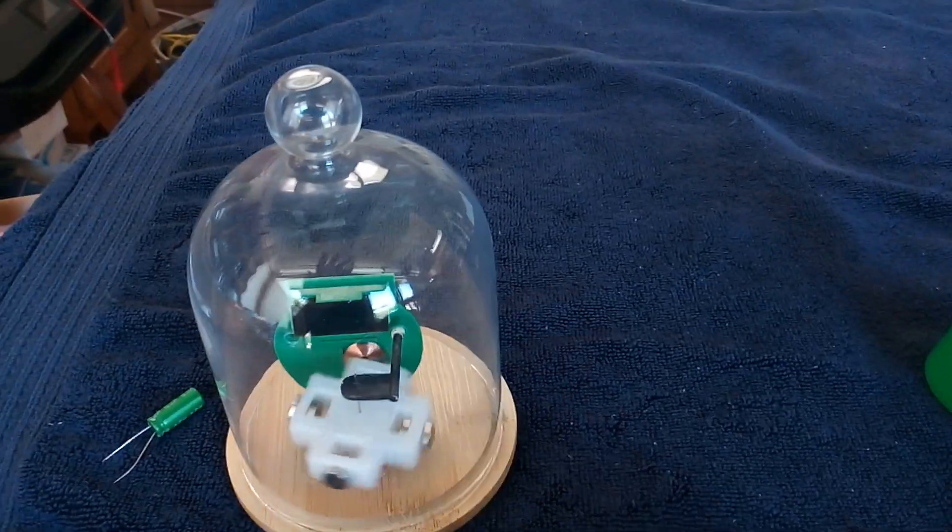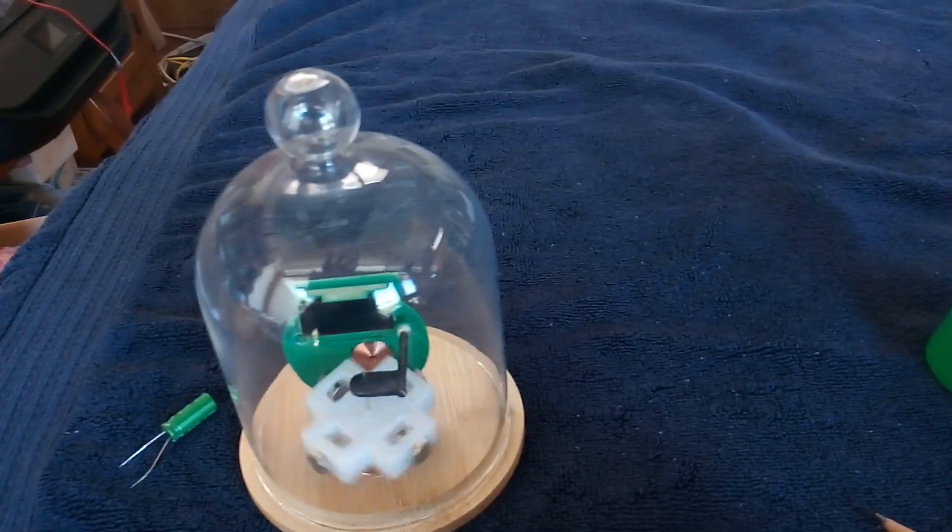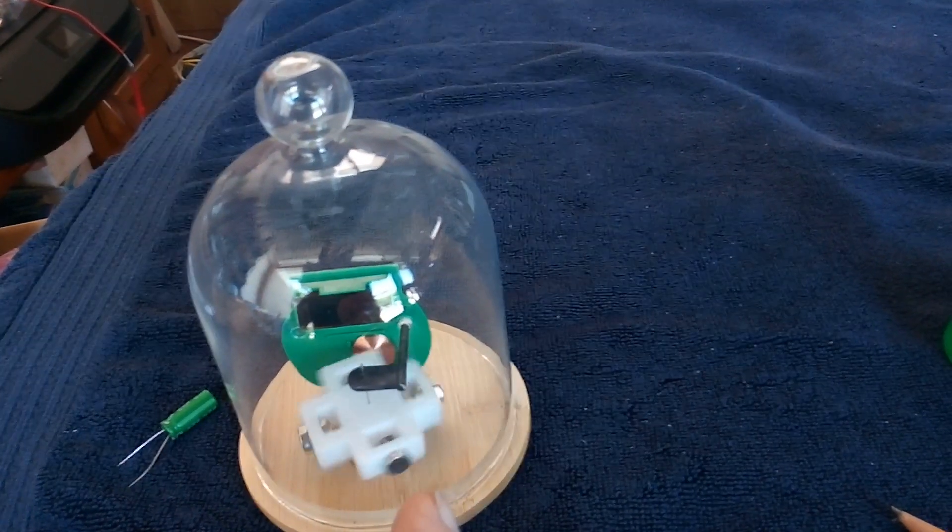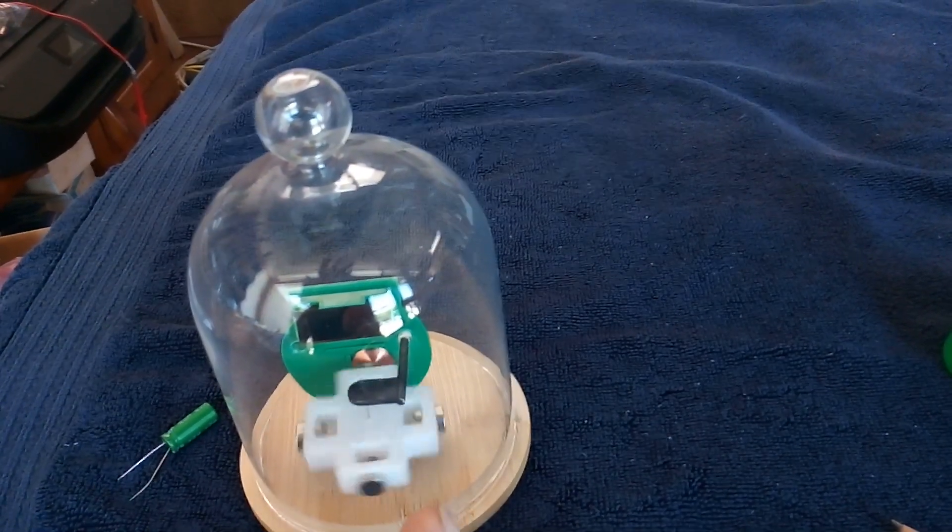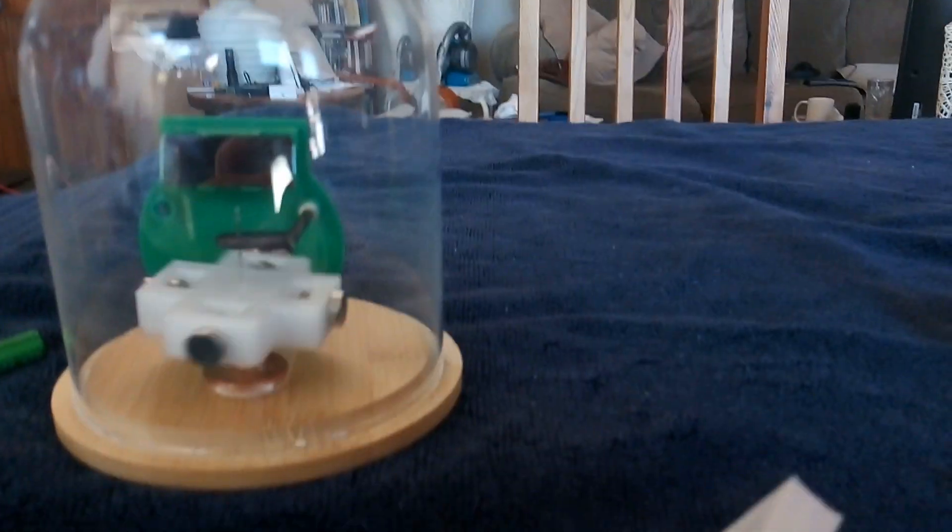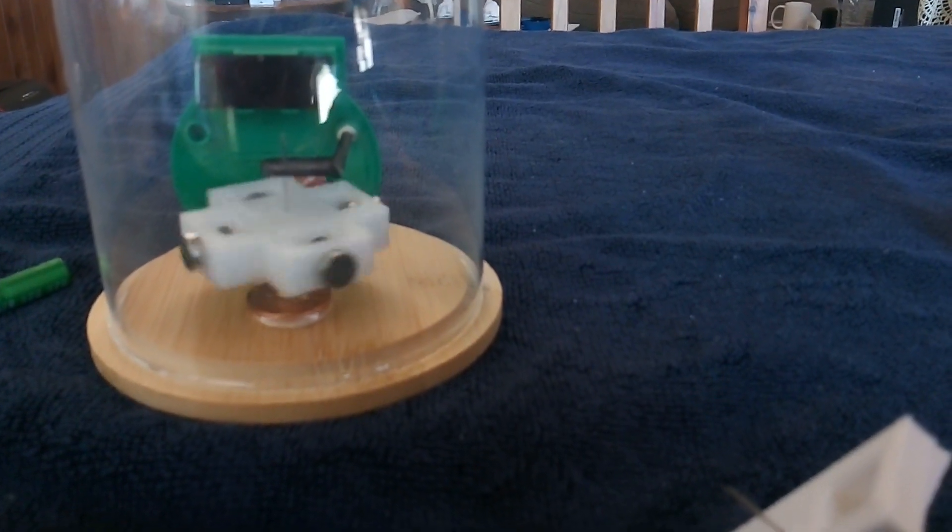A needle goes down the middle of it and it sits in that coin—that's the bottom bearing. That made a pretty neat little pulse motor.